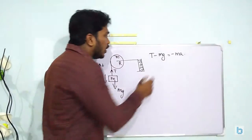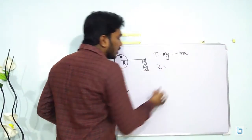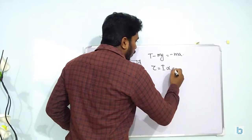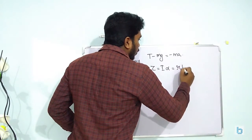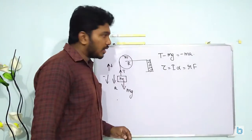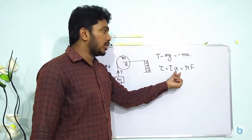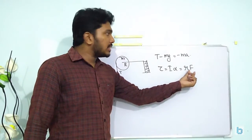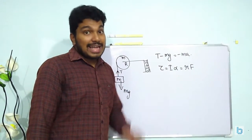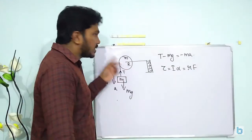Now, something we know about torque is torque is actually equal to I alpha which is equal to R cross F or RF. So I is the moment of inertia, alpha is the angular acceleration, R the radius and F is the force, the tangential force acting on this disc.